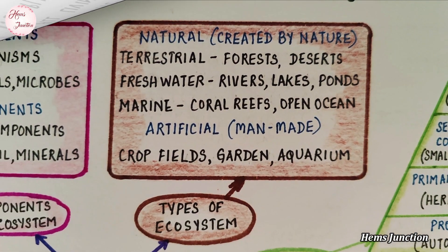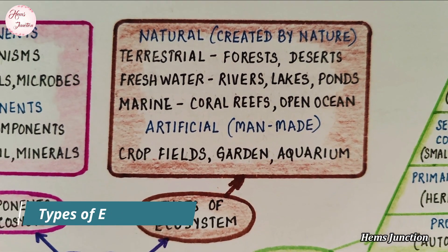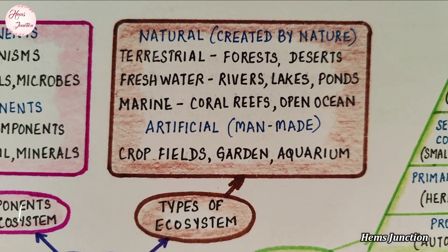Types of ecosystem: natural and artificial. Natural ecosystem is created by nature, like forests, oceans, deserts, and ponds. Artificial ecosystem is man-made, like a garden or aquarium.